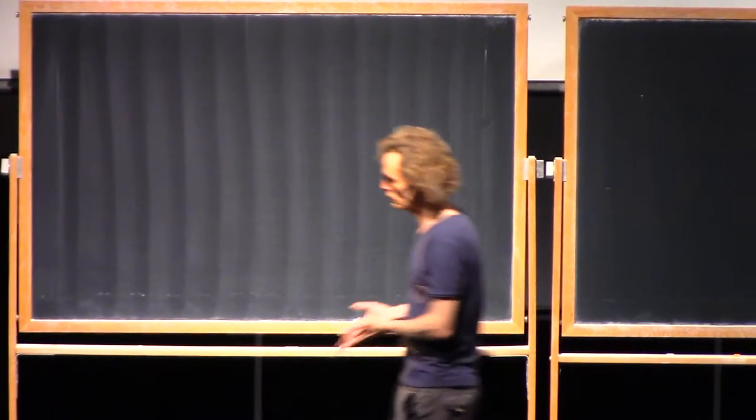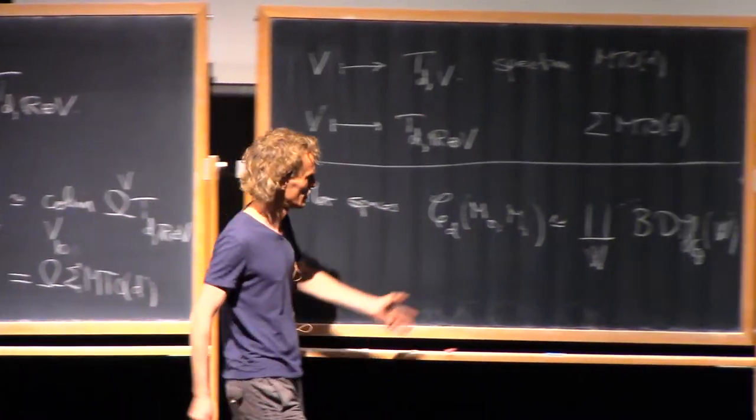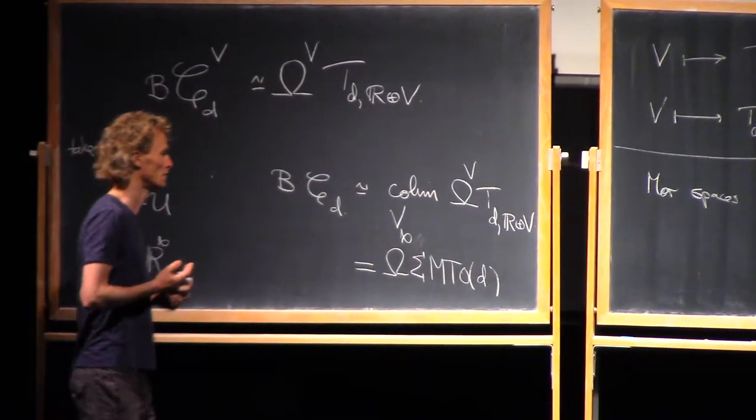And each component is a classifying space for the diffeomorphism group relative to the boundary of that cobordism. So that's something you might be interested in, whether or not you're interested in cobordism categories. It's a classifying space for manifold bundles. The cohomology of it will be characteristic classes of manifold bundles and so on.